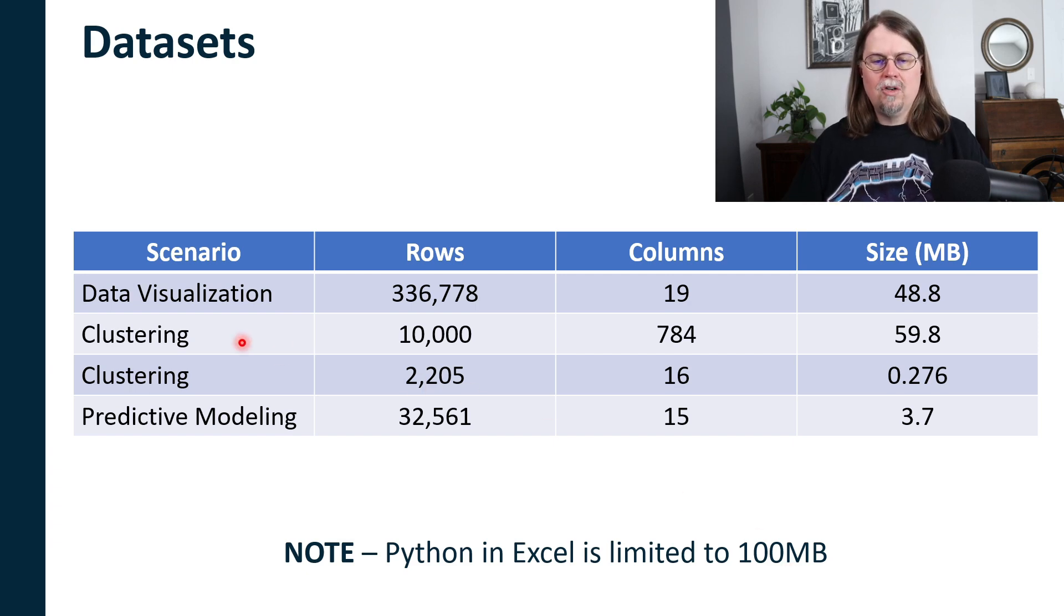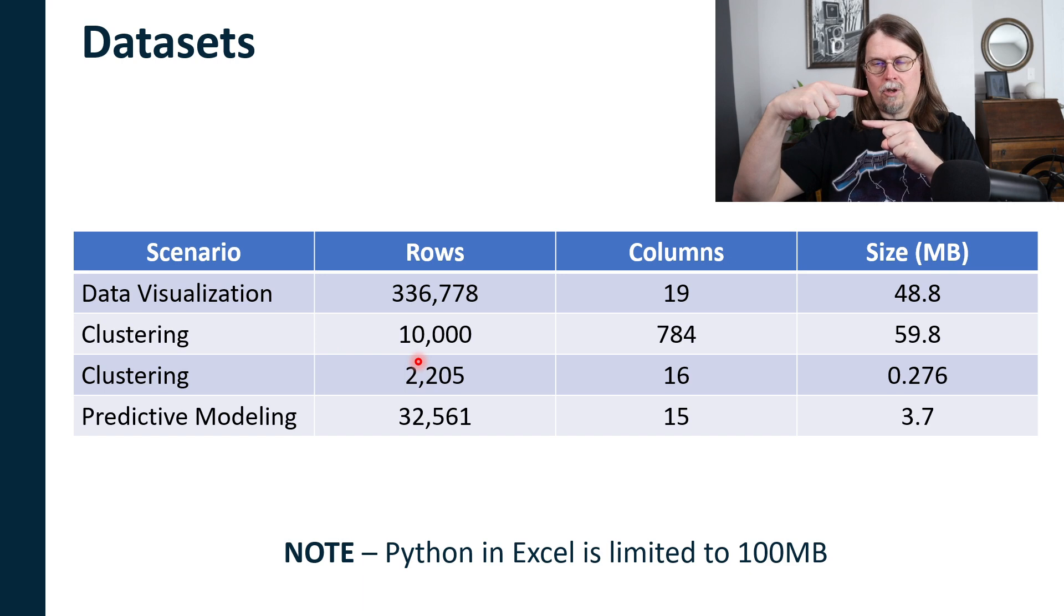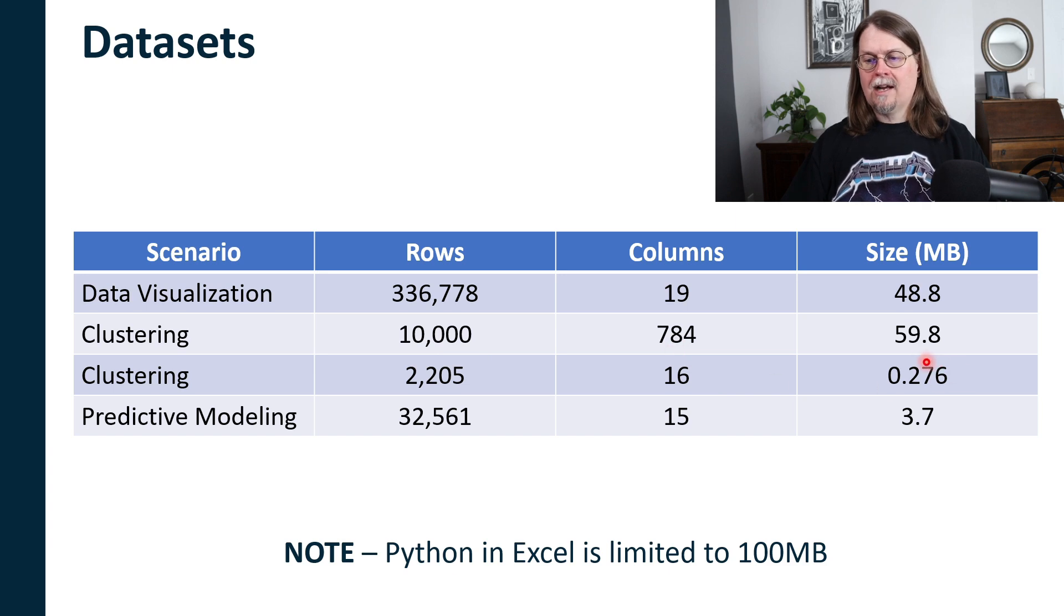Now, the next data set that I used for clustering essentially is the opposite. It's actually relatively short in terms of rows, but it's wide in terms of columns. So 10,000 rows, 784 columns. And that clocked in at 59.8 megabytes, which is still well within the 100 megabyte limit. So that also gives you some idea in terms of like, hey, Dave, I actually have lots of columns. Will Python and Excel work? Yeah, it might. It might. And this gives you a good example.